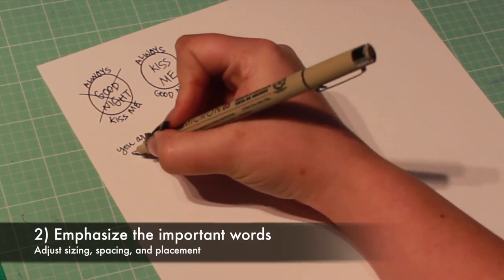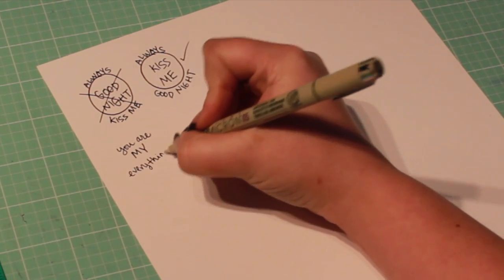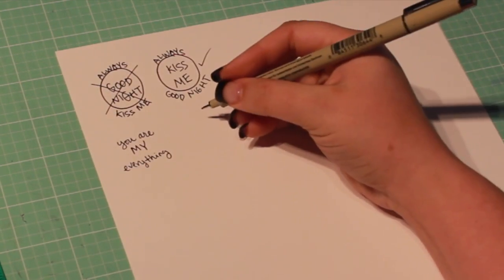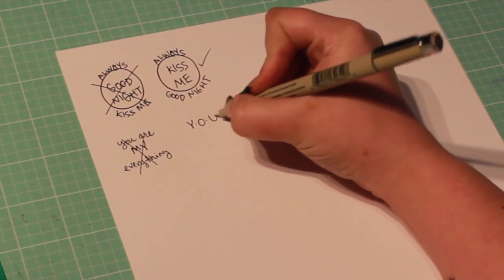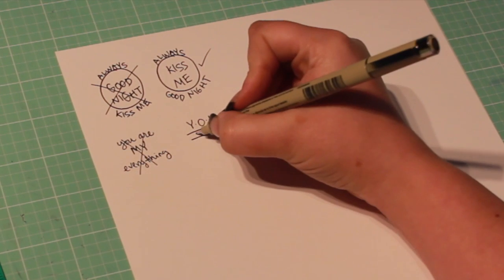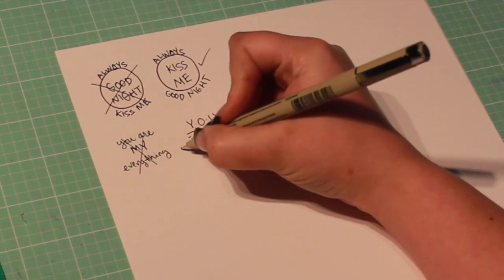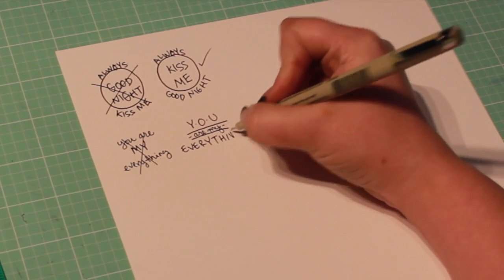Secondly, try to emphasize the most important words by adjusting sizing, spacing, and placement. The first sketch emphasizes the word my, which looks strange. In the second sketch, the words you and everything take center stage, while the words are my serve as accents.